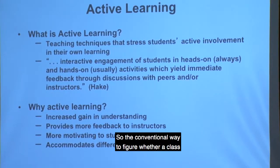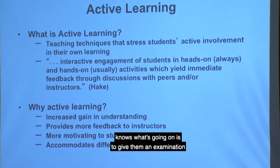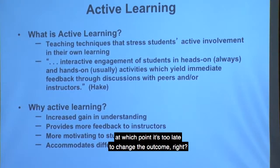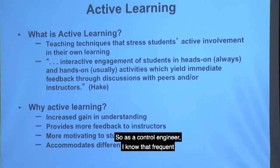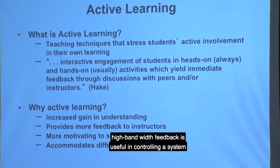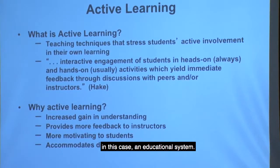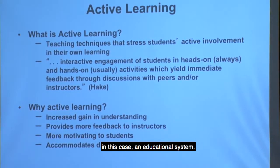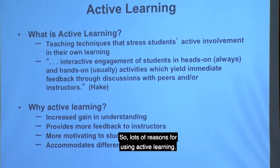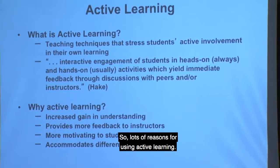The conventional way to figure out whether a class knows what's going on is to give them an examination, at which point it's too late to change the outcome. As a control engineer, I know that frequent high-bandwidth feedback is useful in controlling a system — in this case, an educational system. So there are lots of reasons for using active learning.